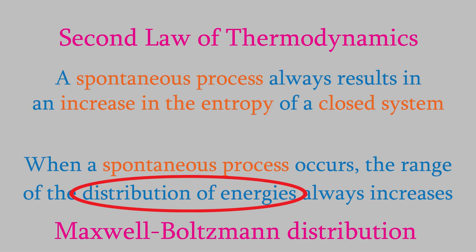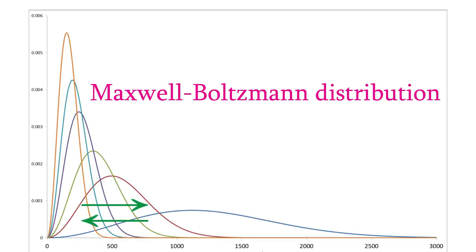So the second law is telling us that the width of this distribution must increase during a spontaneous process so that the molecules in the system are more likely to have a wider range of different energies. There are a few different things to notice about this idea.